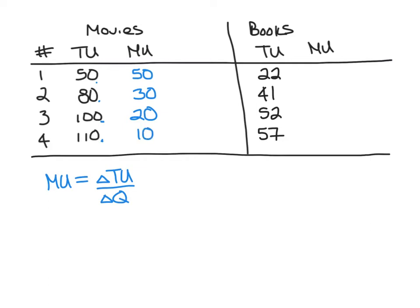If she goes to a fourth movie, her total utility increases to 110, so going from 100 to 110 is an increase of 10 units of utility. Her marginal utility starts at 50 for the first movie, drops to 30 for the second, drops to 20 for the third, and finally drops to 10 for the fourth. This is diminishing marginal utility — the more movies she has, the less she values each additional one, even though the fourth movie still gives her some utility.